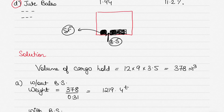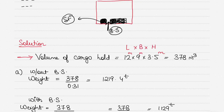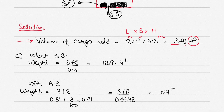Now let's start the solution — it's very simple. You have been given the dimensions of the cargo hold as 12 by 9 by 3.5 meters, so you can directly calculate the volume of the cargo hold by multiplying length, breadth, and height. That gives you 378 cubic meters, which is the volume of the cargo hold.